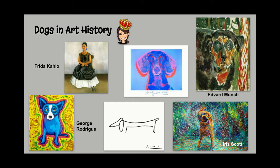Let's look at some dogs in art history. Here we've got Frida Kahlo with her little one, as you can see right here. We've got Andy Warhol with his dog Maurice, which was a dachshund. We've got Edvard Munch with his awesome puppy too — you can see his style. Iris Scott is a contemporary artist who does finger painting, and you can see the water coming off of this dog as it shakes. You've got Picasso's dog, also a dachshund, and George Rodriguez.